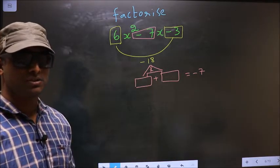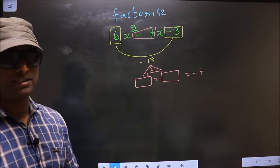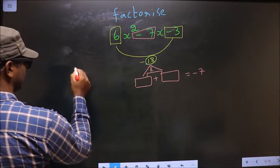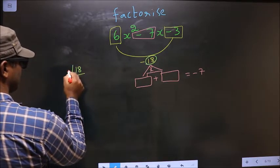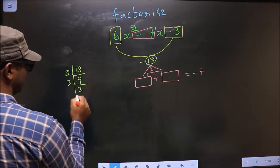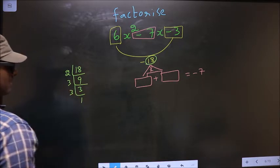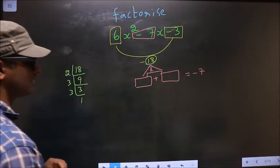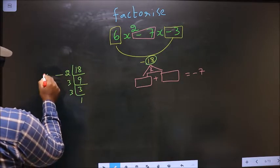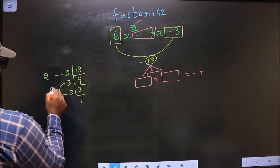To get those 2 numbers we should take LCM of 18. So I start with 2, 9, then 3, 3, 3 and 1. So now the 2 numbers should be 1 number is 2 and the second number is 3 into 3, 9.